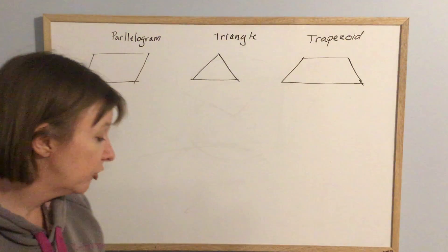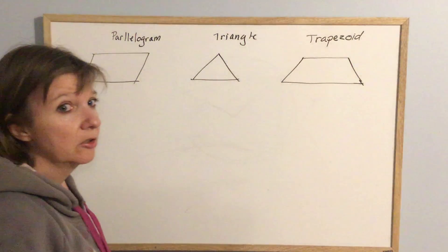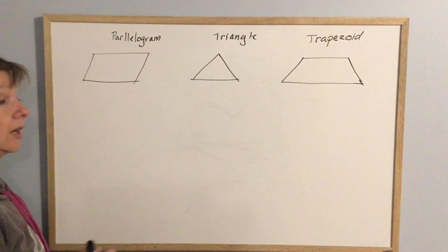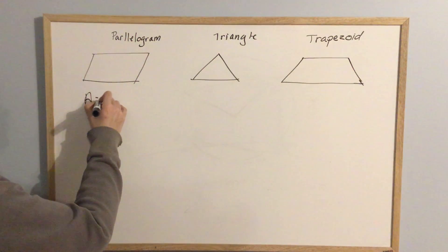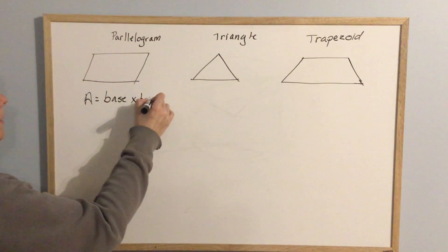So in section 7.2, they deal with three different shapes. They deal with a parallelogram, which is sort of like a rectangle off to the side. Area for a parallelogram is base multiplied by height.